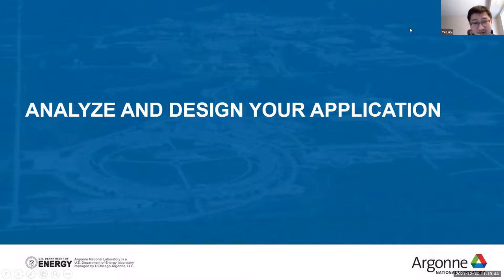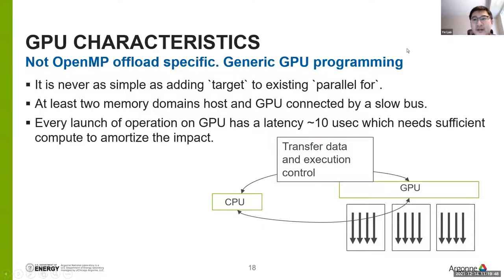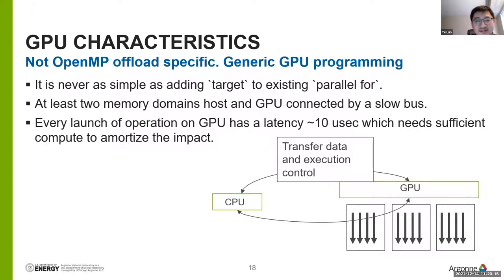The second part will help you analyze and design your application before doing heavy lifting porting work. First, a reminder of GPU architecture characteristics you should not forget. This part is not OpenMP offload specific — it's about generic GPU programming to start with. When people think about OpenMP, some think it's just adding a line 'pragma omp parallel for' on a loop. Even for CPU OpenMP programming, that is an over-simplification or misunderstanding.